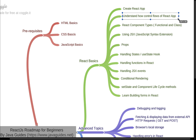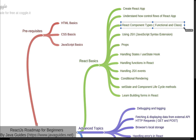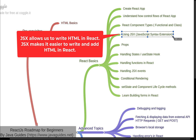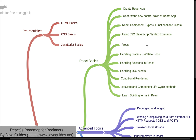Once you understand the control flow and folder structure of the React application, learn React component types. There are mainly two types: functional components (also called stateless components) and class components (also called stateful components). After that, learn JSX — JSX is a JavaScript syntax extension that allows us to write HTML code inside React, making it easier to write and add HTML elements.